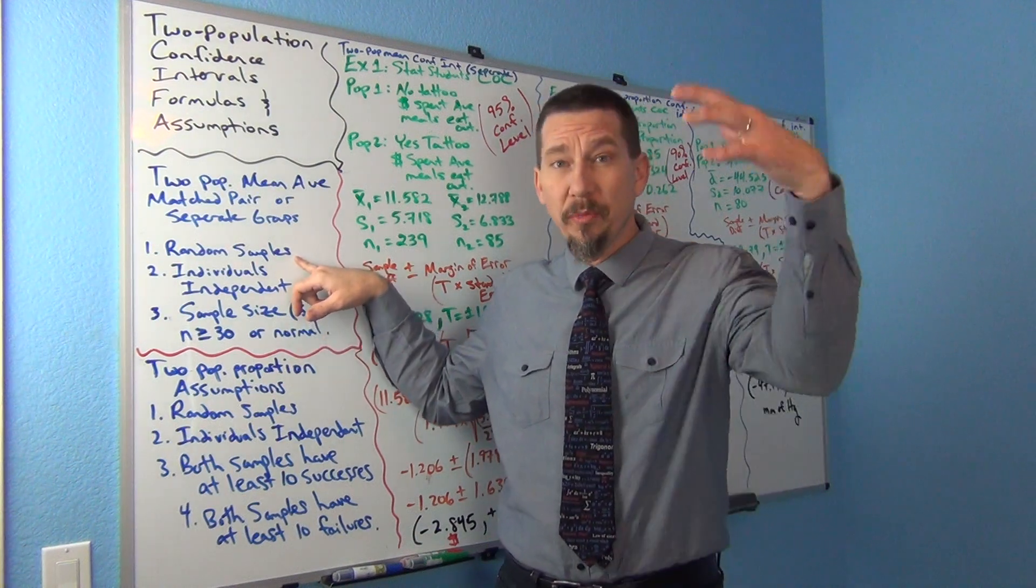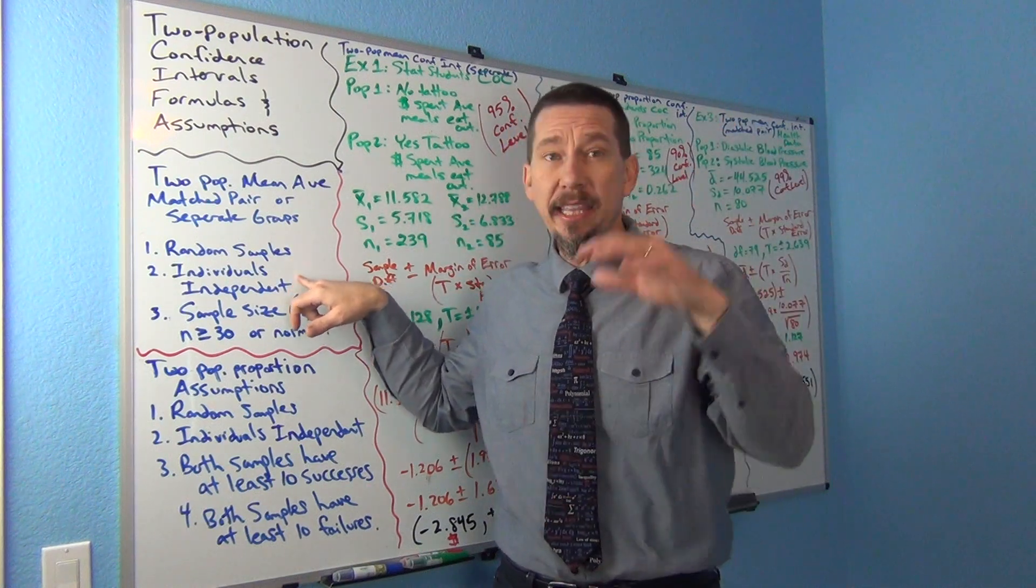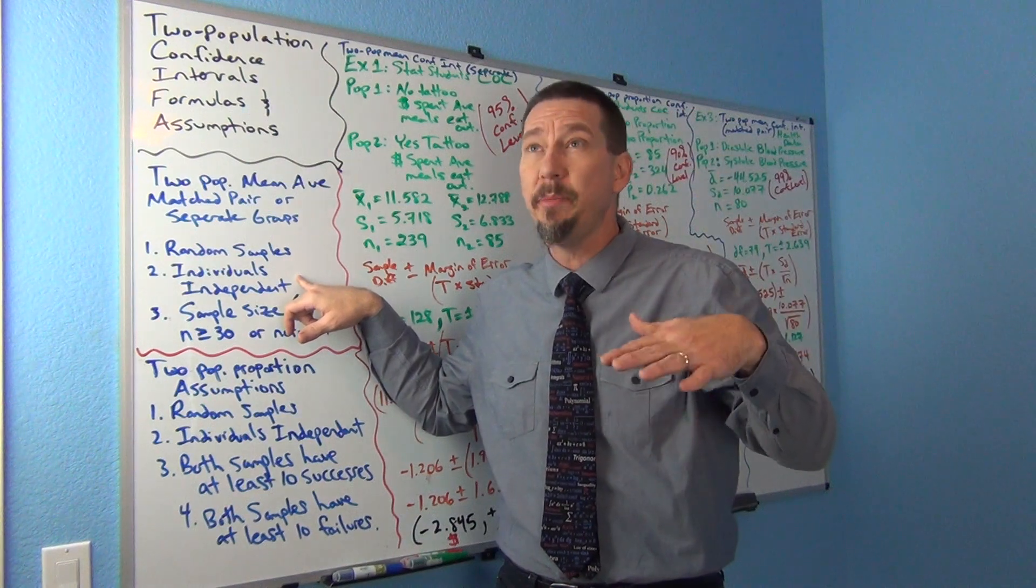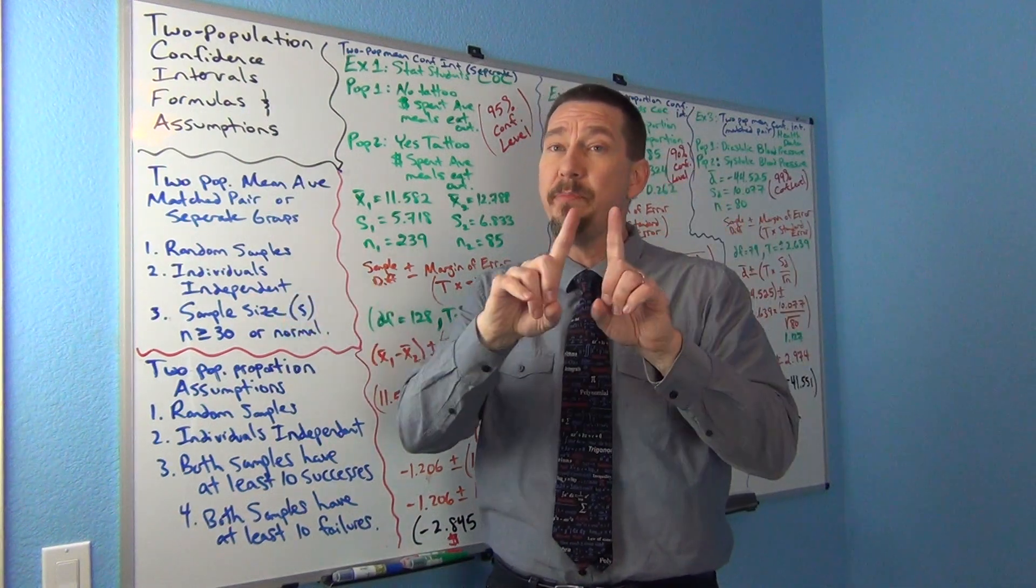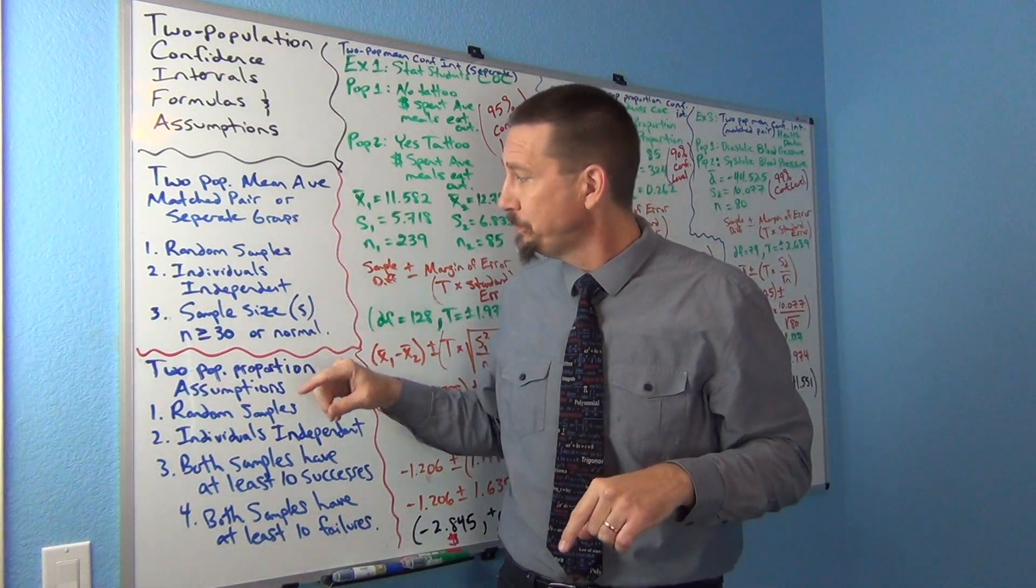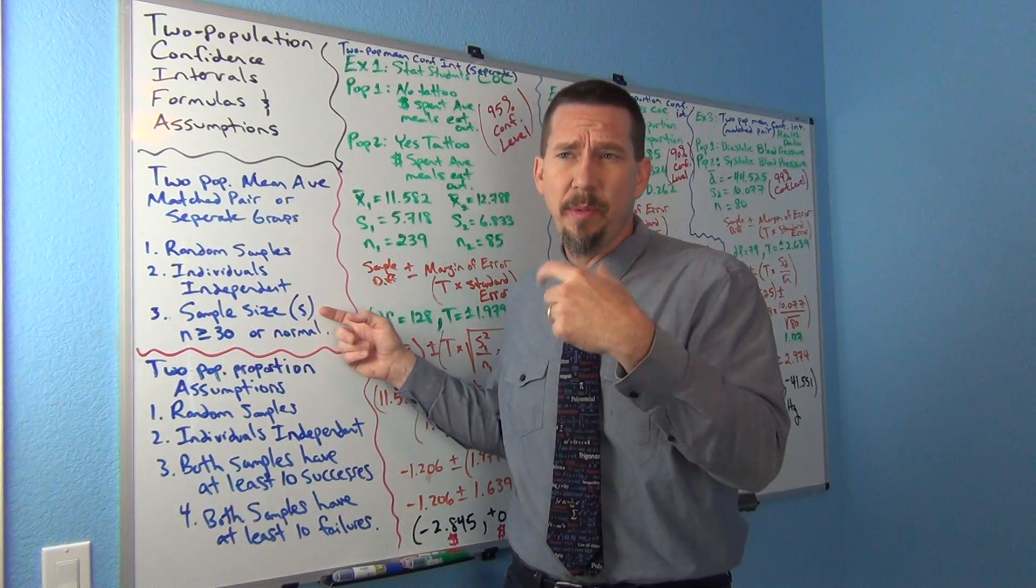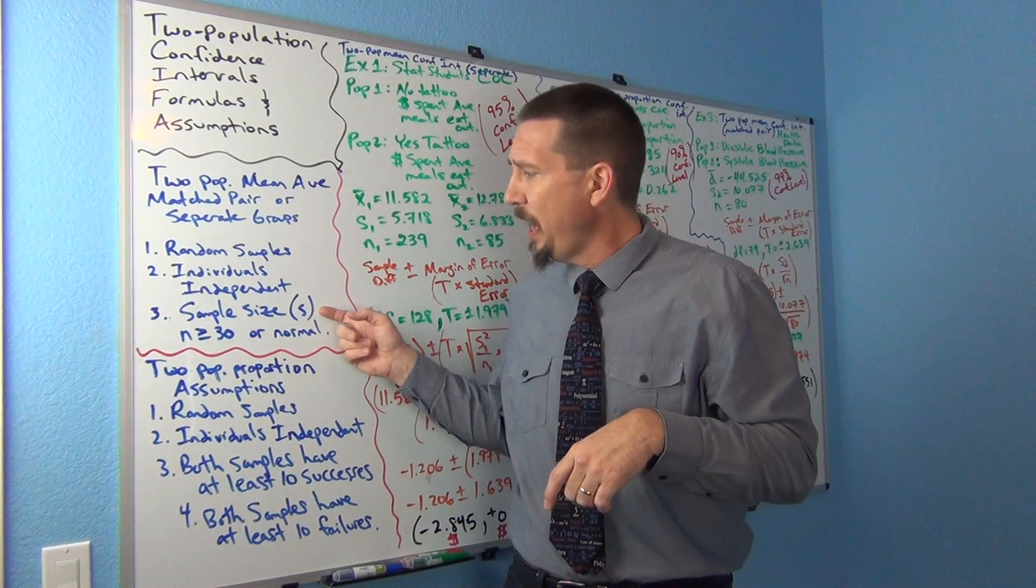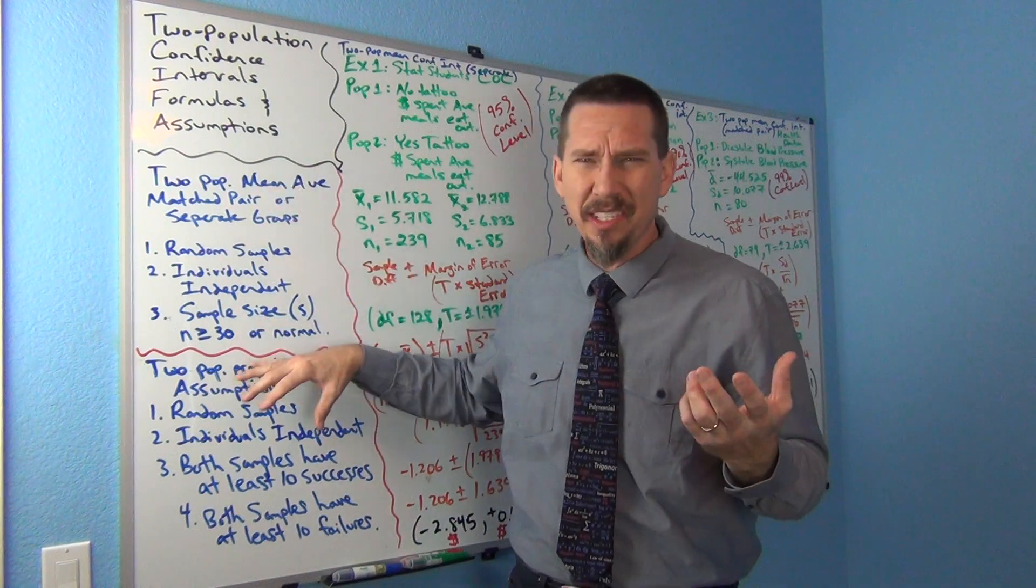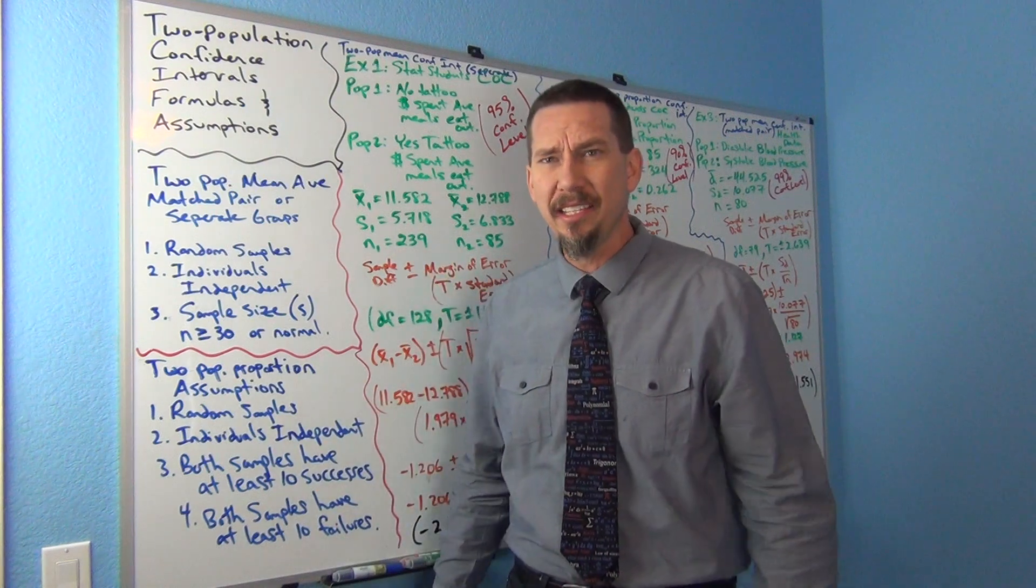The formulas, the assumptions are about the same. Now we'd need just one random sample of people but we're going to measure them twice. Again, the individuals inside the sample will be independent, need to be independent of each other. But between the samples won't be independent because it will be the same people measured twice. And then the sample size of the differences, usually we look at the differences between the ordered pairs, and that has to be at least 30 or normal. So really it's the same assumptions that we've already learned, it's just kind of checking everything twice and sort of applying it to the situation.